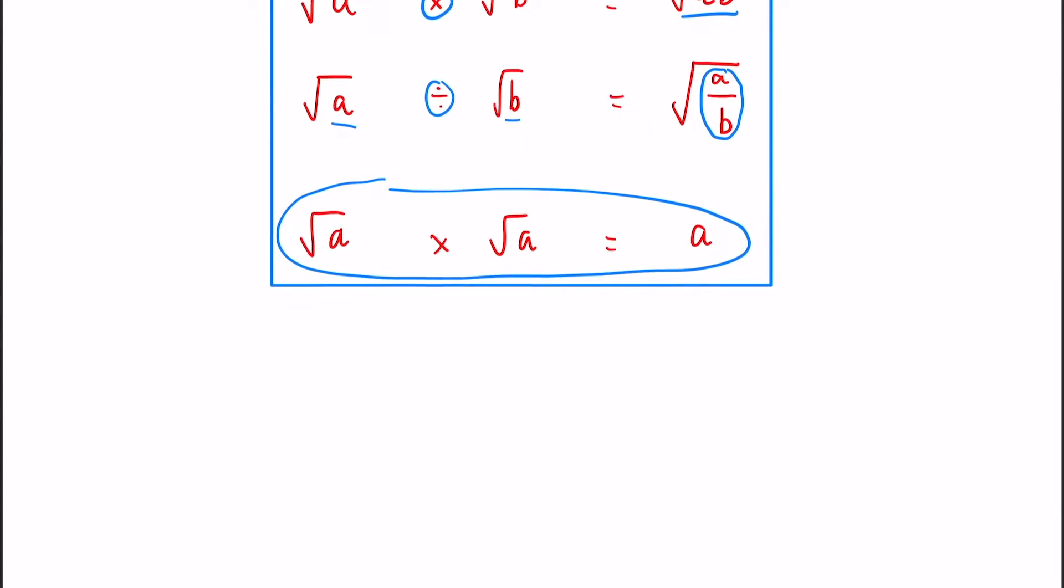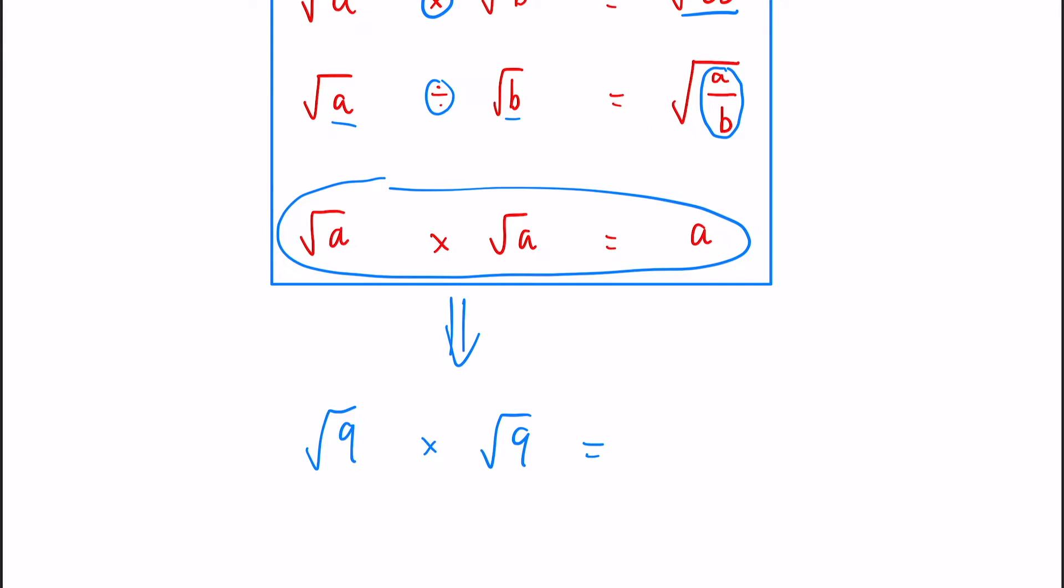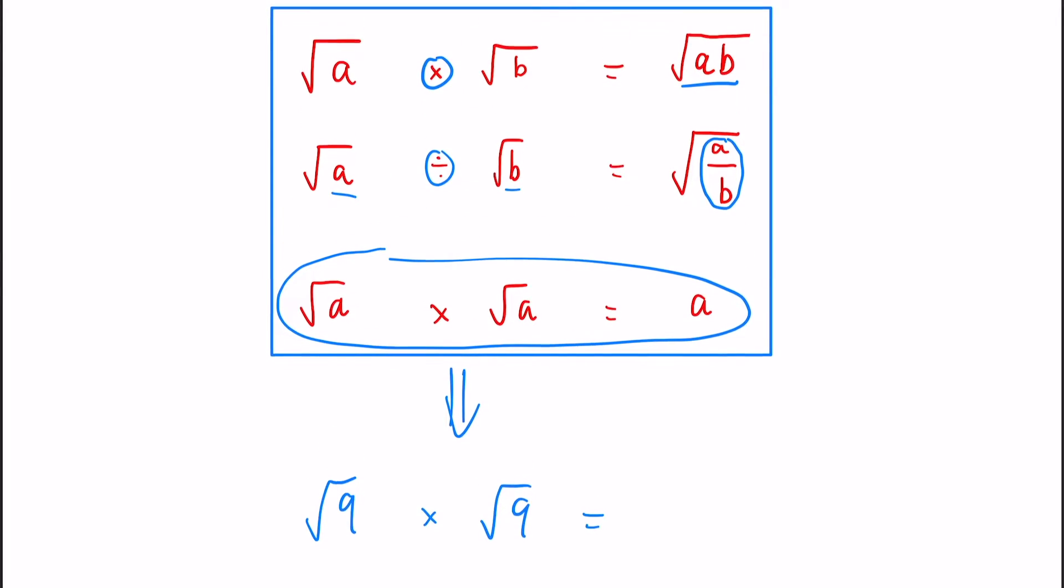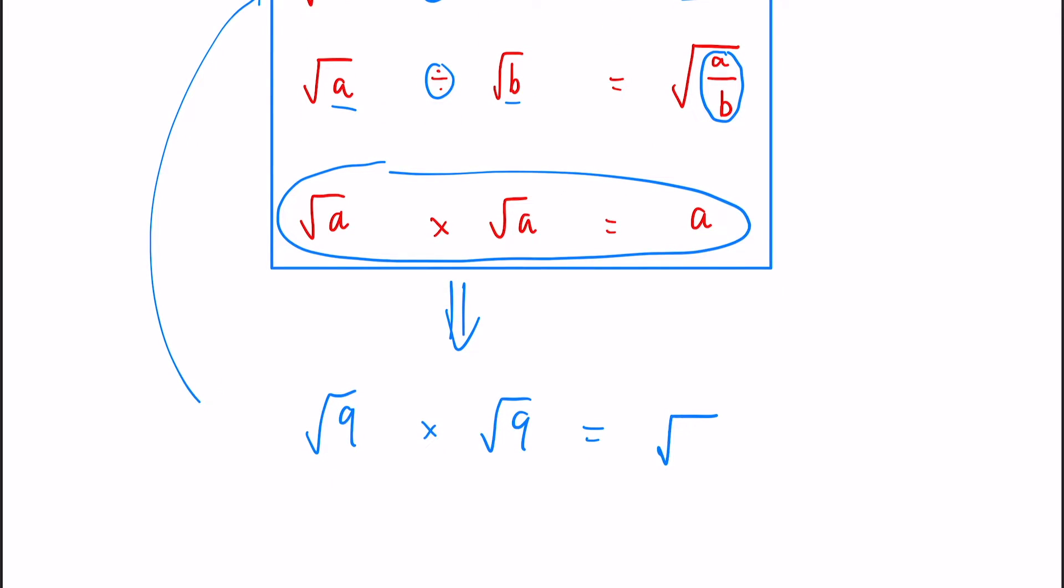So using an example to see this, let's take the square root of 9 times by the square root of 9. Now using our multiplication rules up here, all we have to do is times the numbers together inside the roots and it will give us our answer. So 9 times 9 is root 81. But the square root of 81 is actually 9.